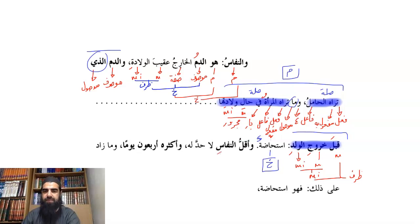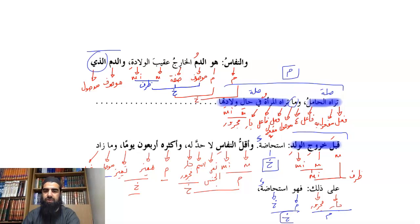So let's just mark off what the silah is. So alladhi tarahu alhamilu, that's the silah of alladhi. And then tarahu al-mar'atu fi hali walaadataha qabla khuruj al-walad, that's the silah of ma. And then all that becomes the mubtada and then istihadatun becomes the khabar. And there you have it as a tarkib basically.